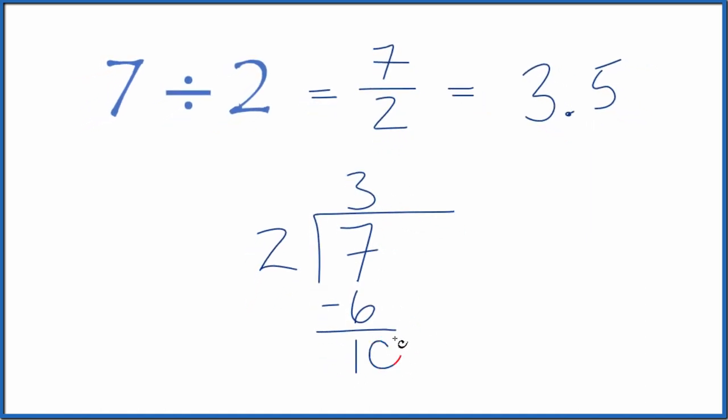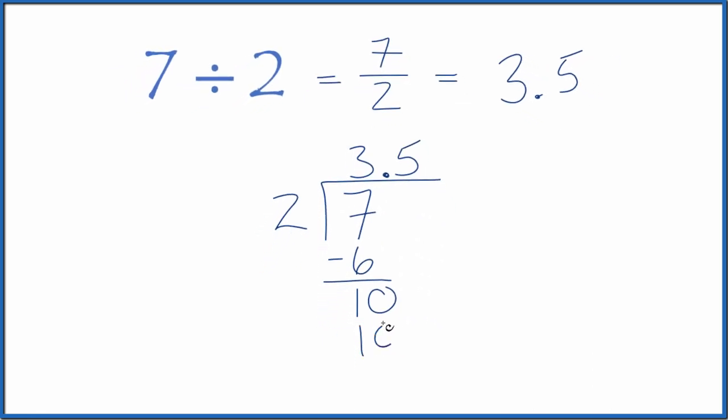Let's call this 10 and then put a decimal point up here. Now 5 times 2, that's 10. So when we subtract, no remainder.